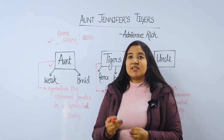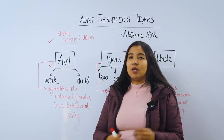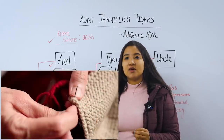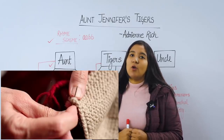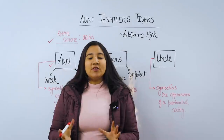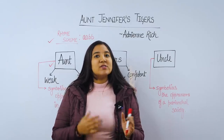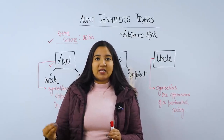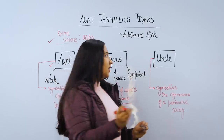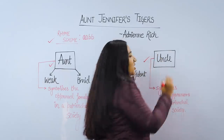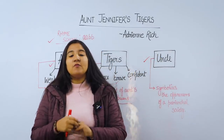In the second stanza, we know that Aunt is facing a lot of difficulty in completing her tapestry because her fingers are fluttering. In the fluttering fingers, the poetic device used is alliteration. The difficulty is that she cannot use an ivory needle to complete her weaving. This is because of her husband, who is referred to here as uncle.